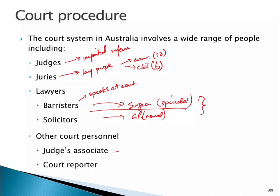You might also see a judge's associate — often an early-career lawyer, maybe straight out of law school, who helps the judge find cases and do research. And there's a court reporter, because under the doctrine of precedent the actual record of the decision is critical. The court reporter transcribes what people are saying so it can be referred back to later. There are quite a lot of people involved in court proceedings.